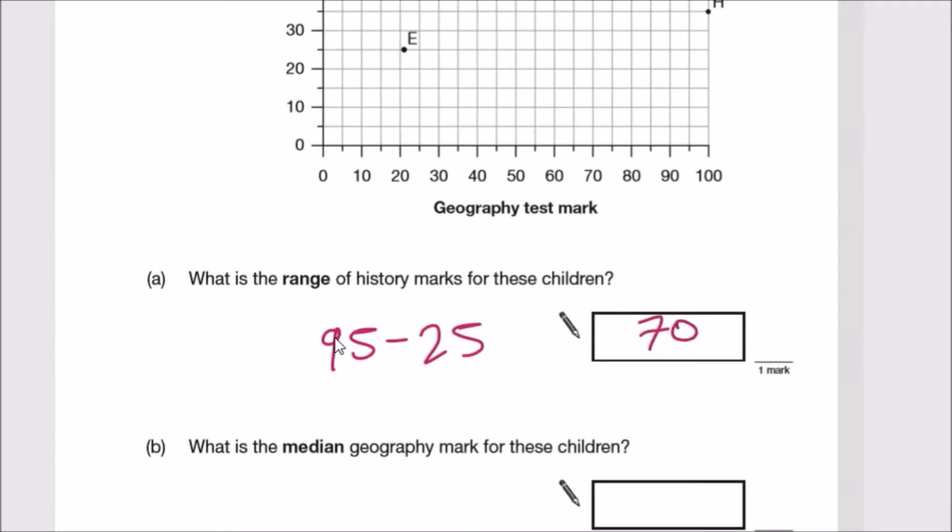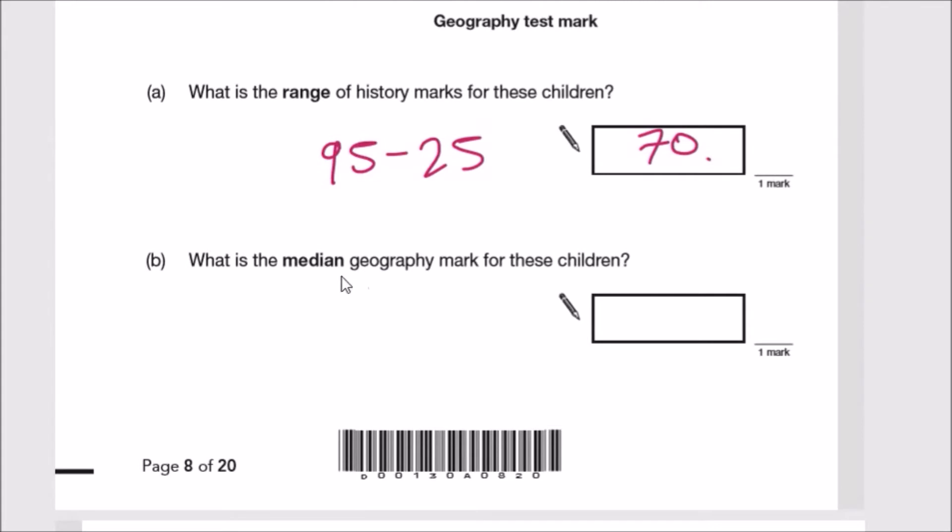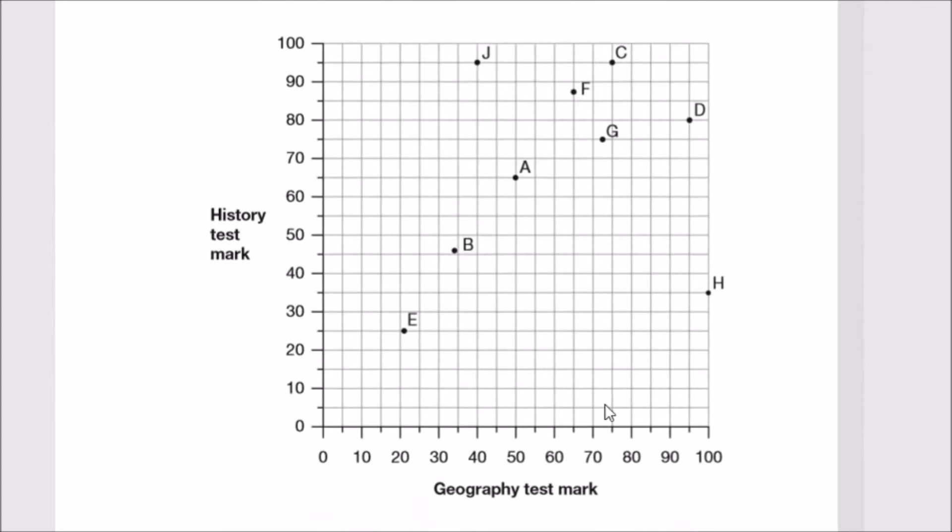What is the median geography mark for these children? Median is the middle value. Geography is horizontal, so find the middle student. I cross them out from left to right: first on the left, last on the right, second is B, D is next on the right, J is third on the left, C is third on the right, A is fourth on the left, G is fourth on the right, so it must be F. F scored 65 in geography, so the median is 65.